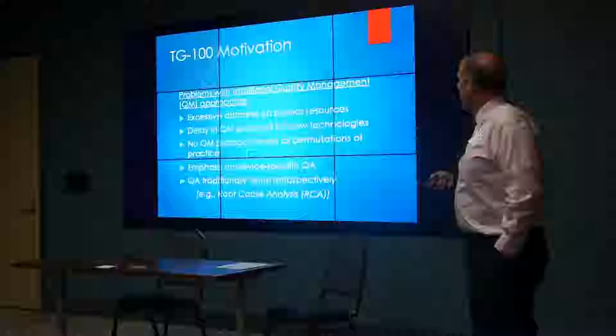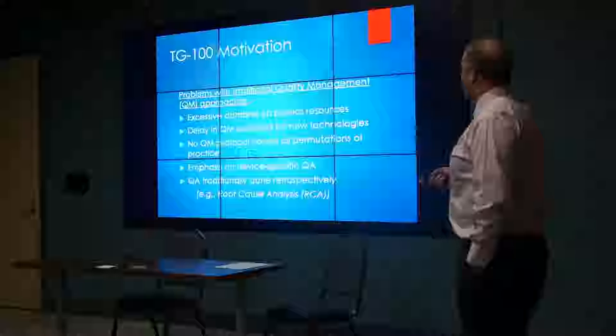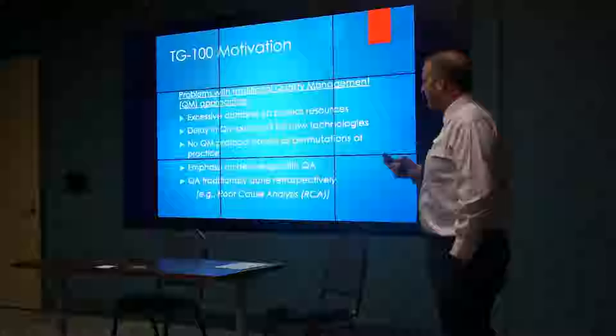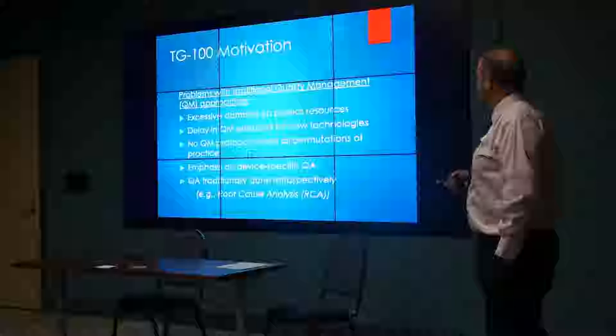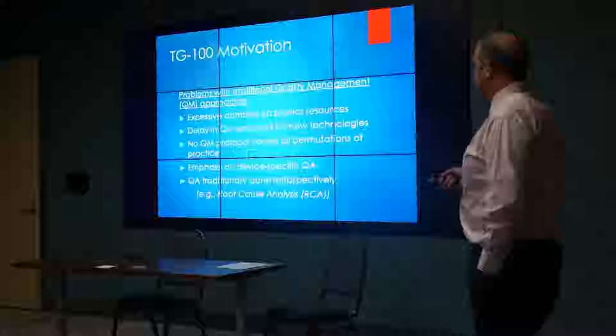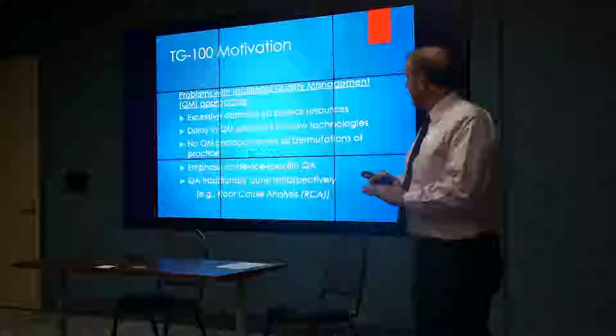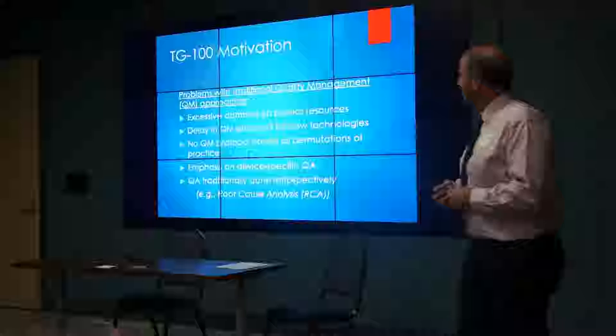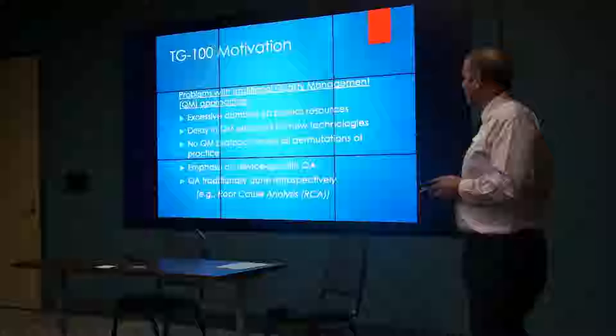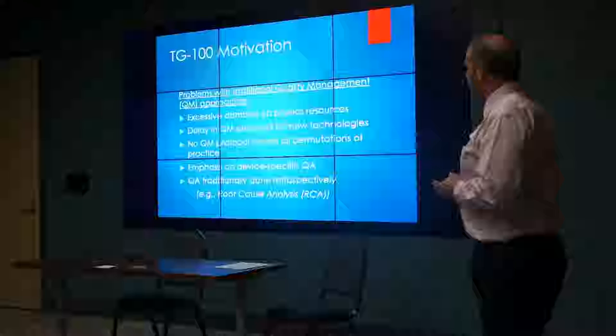What is the motivation for this new approach? There are several problems with traditional quality management approaches such as TG-40 or TG-142. One is an excessive demand on physics resources—modern technologies are very complex, with lots of components, and physicists are strapped to do QA on all of these devices. A lot of times it's not necessary if those devices are not used in the way that the quality assurance measurement is testing. There's also a delay in quality management protocols—when task groups are created, it sometimes takes years before they produce a report.